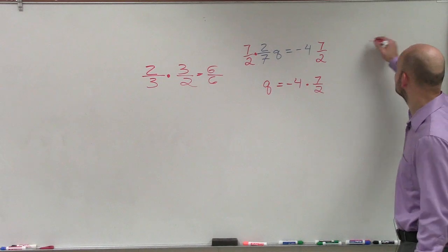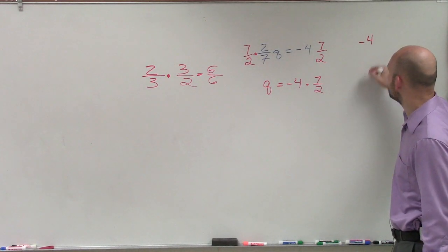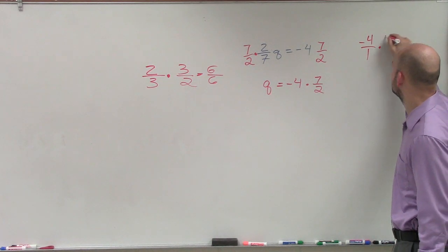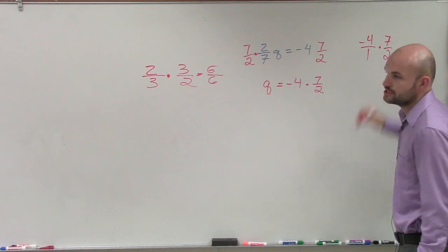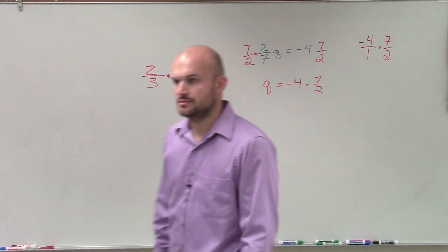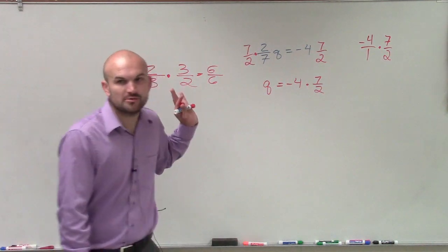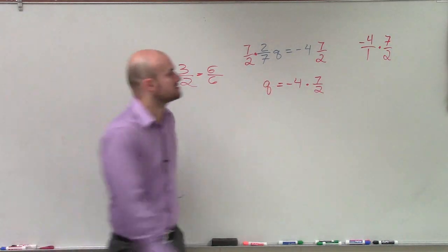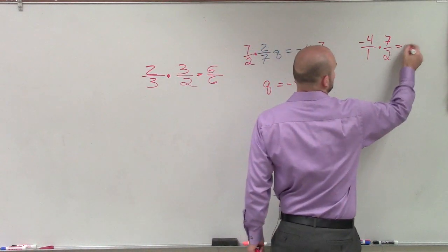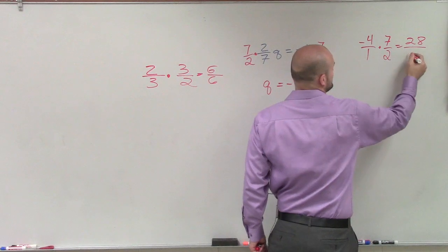But all you need to do to multiply a whole number times a fraction is just make it a fraction. So you can just put it over 1. Now when you multiply fractions, we just multiply across. Negative 4 times 7 equals 28. 1 times 2 is 2.